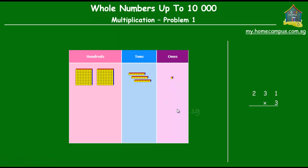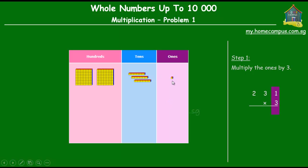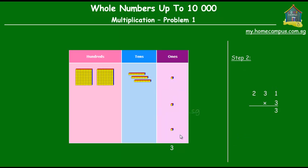The first step is to multiply the ones by 3. There is one ones, and we multiply that by 3. In the place value chart, there is a single one in the ones place, and three times that gives us three ones. So one times three is three — one ones times three is three ones.